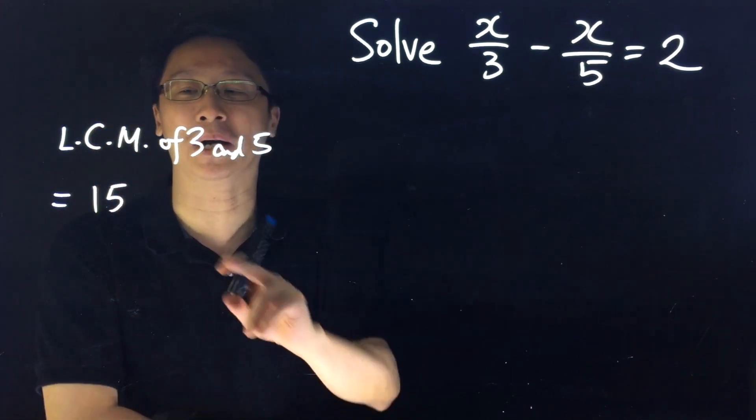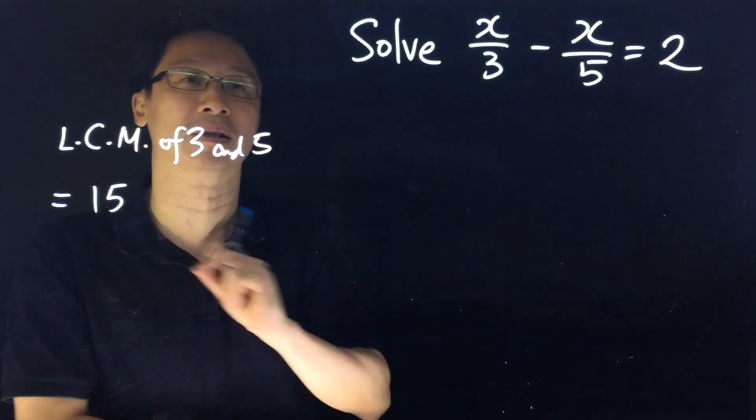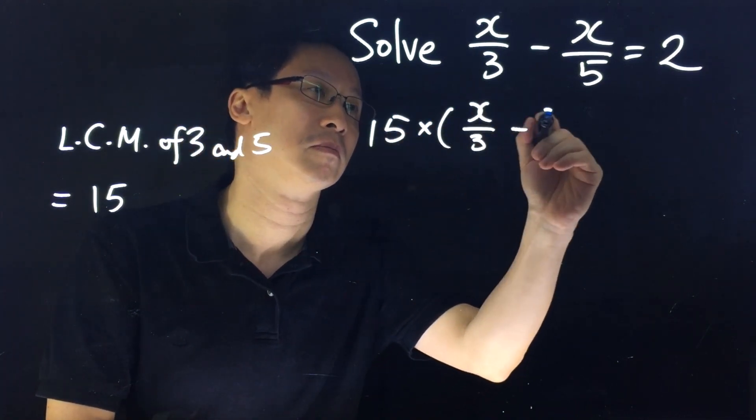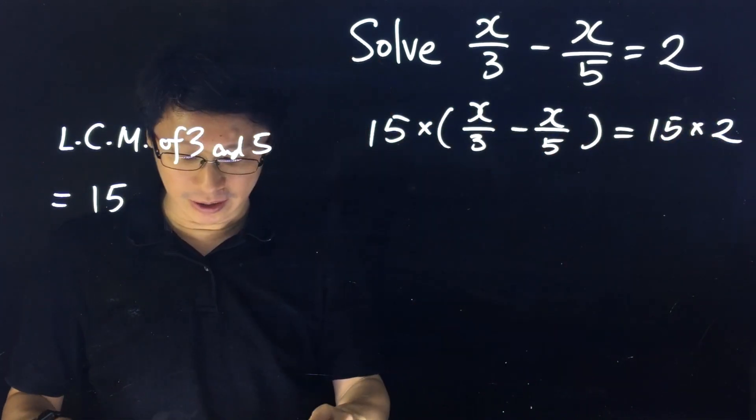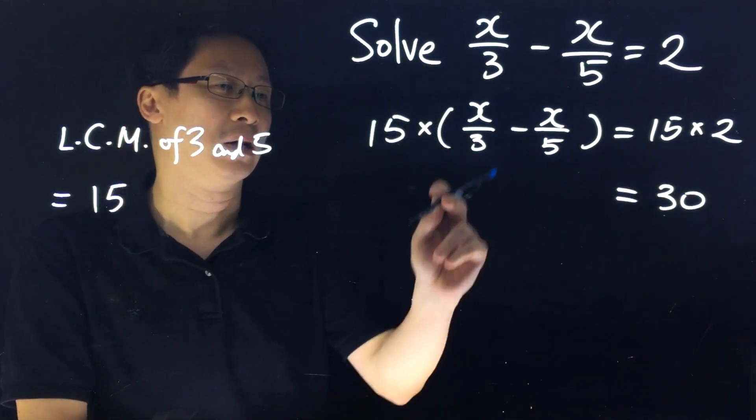Now we're going to multiply every term in the equation by 15. The right hand side becomes 30. What about the left hand side?